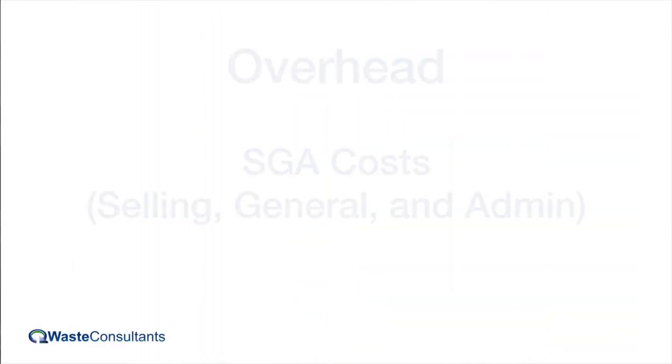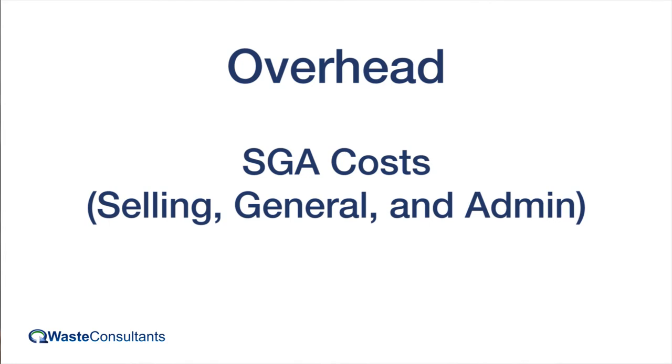The fourth component is overhead. The cost of overhead is determined by SG&A — selling, general, and administrative costs. These are the costs a hauler incurs to sell, run internal operations, and support their admin and staff.